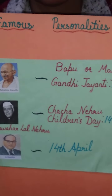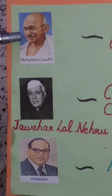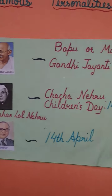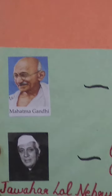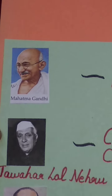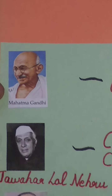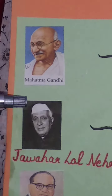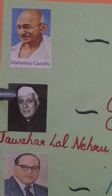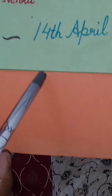Now let's revise the famous personalities of our country. He is Mahatma Gandhi, the father of the nation, also known as Bapu or Mahatma. His full name is Mohandas Karamchand Gandhi. He was a great freedom fighter who helped us in achieving our freedom. The capital of Gujarat, Gandhi Nagar, is also named after him. Another famous leader is Pandit Jawaharlal Nehru. Another famous leader is Dr. B.R. Ambedkar, whose birthday is celebrated on 14th April.